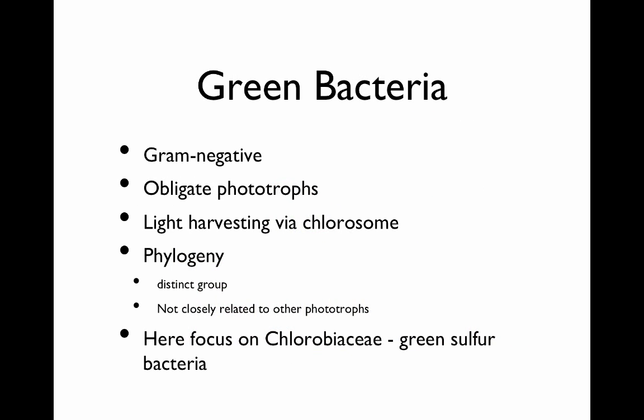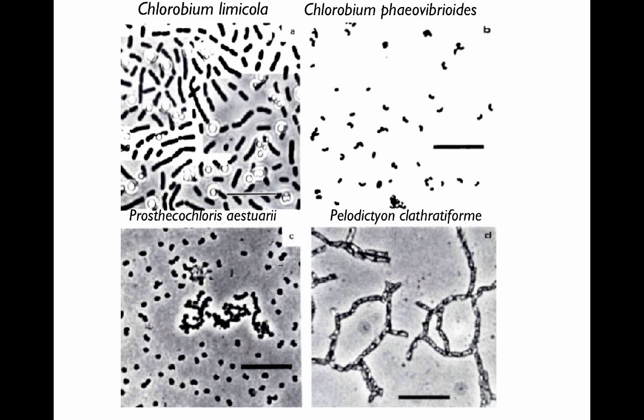Green bacteria are gram-negative and obligate phototrophs. They use light harvesting via a chlorosome. Their phylogeny is distinct — they are not related to other phototrophs. Here we'll focus on one group, chlorobiaceae, which are green sulfur bacteria. Here are some examples of different green sulfur bacteria — they're called sulfur bacteria because they make globules of sulfur while they grow.